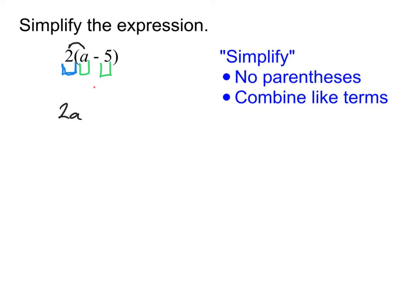The next thing here is a minus symbol. That minus is going to stay a minus. Then I'm going to multiply the two times the five, which is 10. So by distributing that two into the parentheses — that is, multiplying it by everything inside — we end up with 2a minus 10. There are no like terms here because the first term has an a and the second does not. They have to have the same variable and exponent to combine, so 2a minus 10 is our final answer.